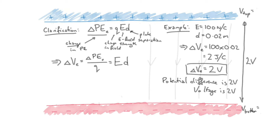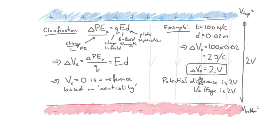We obviously need those values to calculate it, but the key is the potential difference. We often define the potential in electrostatics as zero at a reference point relating to neutrality — where the potential is neither negative nor positive. The change in potential is a much more useful parameter because the potential difference is what affects charges between those plates, not the absolute values of potential.